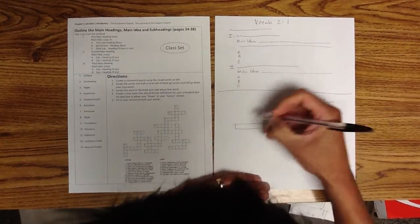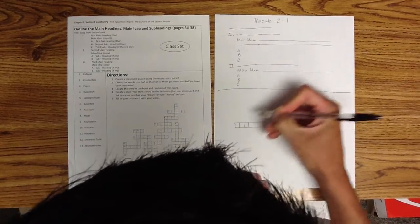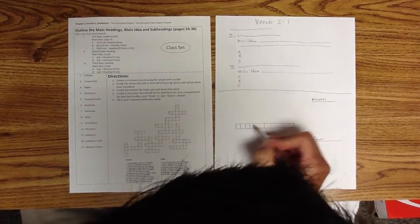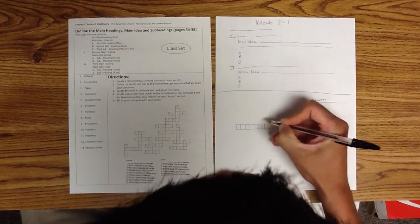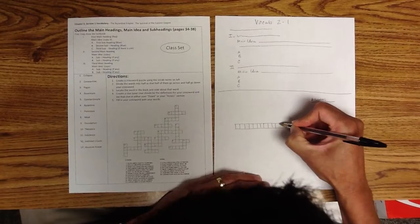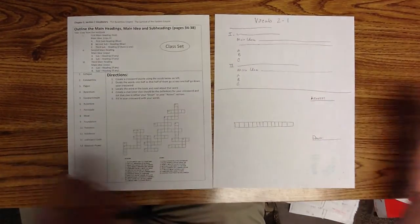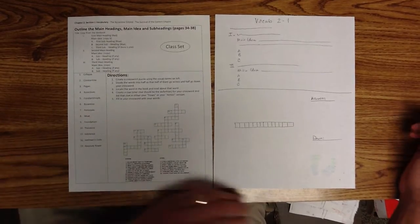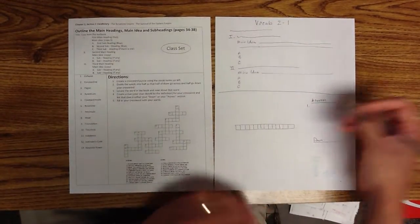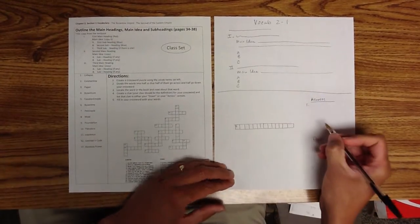So I'm going to need 1, 2, 3, 4, 5, 6, 7, 8, 9, 10, 11, 12, 13, 14. So I could say this is number 1 or number 1 across, right? So I put my little 1 over here. And I know it's going to be Constantinople.